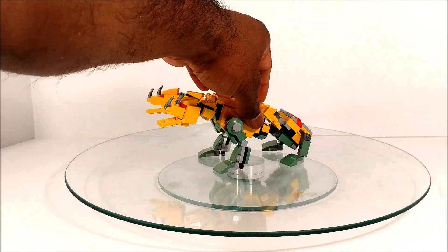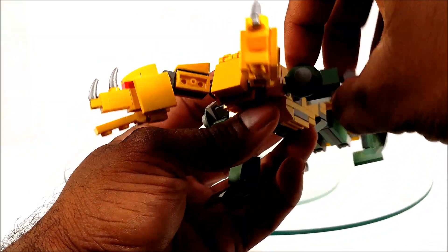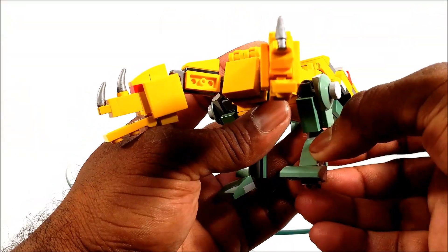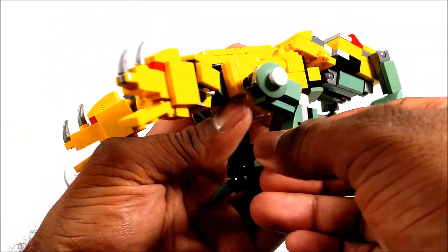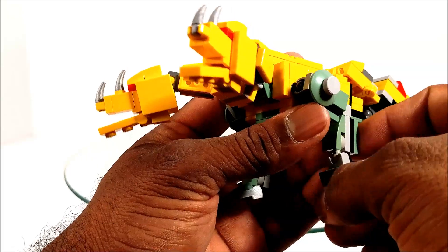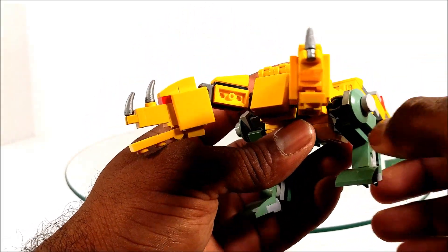Let's get into articulation in monster mode. As you can see here with the front arms, pretty much same as the robot: full 360, elbow bend. We do have ankle articulation on these Mixel hand joints right here, very nice.